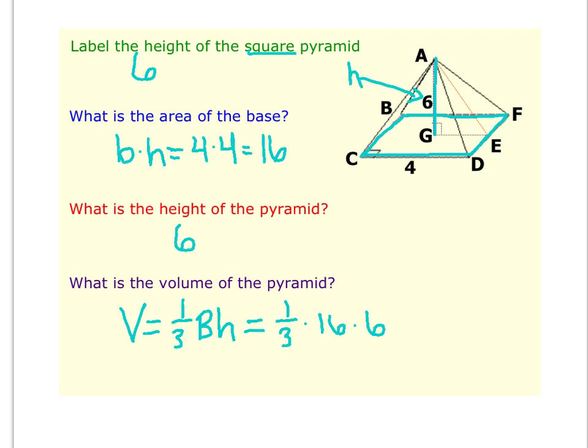Now when you enter this in your calculator, it's much easier to do 16 times 6 and then divide by 3. And when you do that, you should get 32 cubic units. Again, remember that volume is always units cubed. So we use an exponent of 3 when we write the unit.